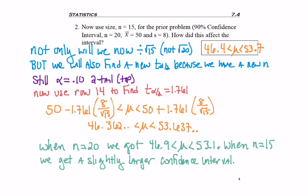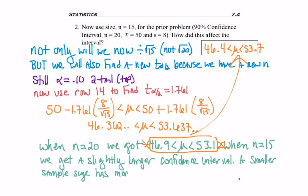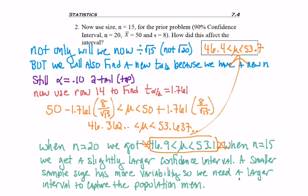46.4 is a little bit below 46.9, and 53.7 is slightly above 53.1, so the old confidence interval fits inside the new one. What does that mean? A smaller sample size has more variability, so we need a larger confidence interval to capture the population mean.